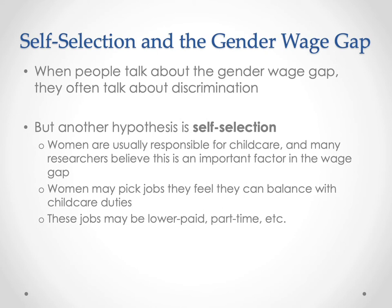At the same time, we do see evidence of women selecting into different kinds of jobs. Another example would be lawyers — the highest paid lawyers work at especially demanding law firms where sometimes you have to work 60, 70, or 80 hours in a week. Some women may choose not to work in those kinds of firms because it doesn't allow them to do the other kinds of things they want to do in their lives. And so they are selecting out of the highest paying jobs.